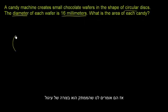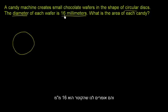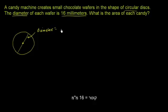So the candy, they say it's the shape of circular disks. And they tell us that the diameter of each wafer is 16 millimeters. If I draw a line across the circle that goes through the center, the length of that line all the way across the circle through the center is 16 millimeters. So the diameter here is 16 millimeters.